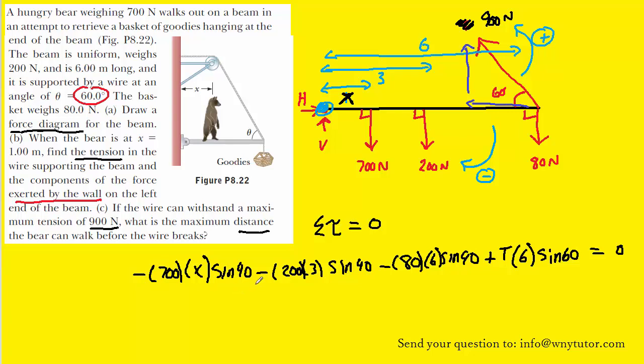Notice once again that most of the torques are negative. It's because those downward forces are trying to rotate the beam in a clockwise fashion. Also note that we have just one variable to solve for, it's x, so we can go ahead and do so. And we get 5.14 meters. So that would be the distance that the bear could walk out.